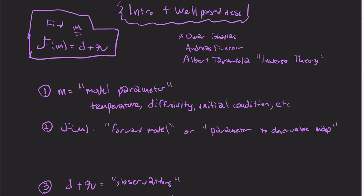F of this operator f is what we'll call the forward model, or parameter to observable map. And just note that this is not the same as the forward problem.